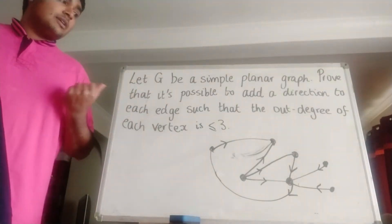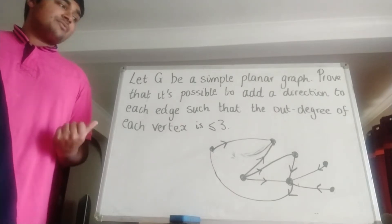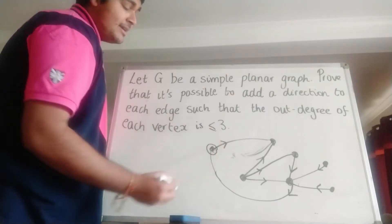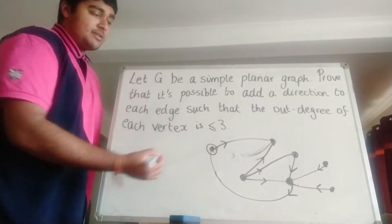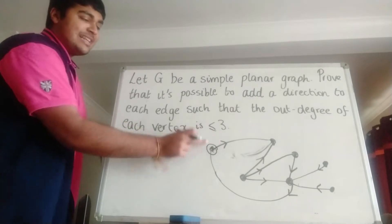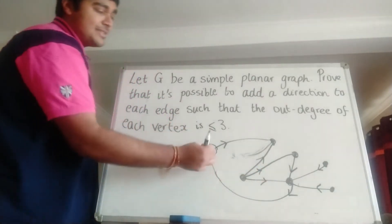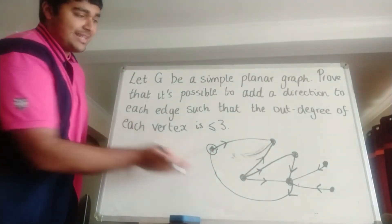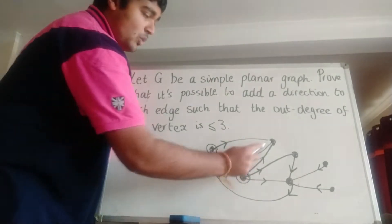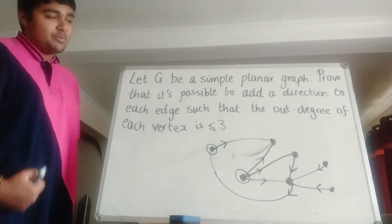We want to show it's possible to add directions so the out-degree of each vertex is at most 3. The out-degree of this vertex here is just 1 because there's only one edge you can leave from. This one comes into it but you can't leave going that direction. The out-degree of this vertex here is 1, 2, 3 because there are 3 arrows essentially pointing away from it.